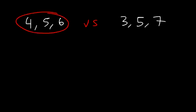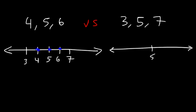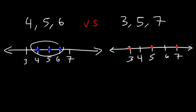4, 5, and 6 are closer to each other than 3, 5, and 7, and you can tell if we plot them on a number line. With 5 in the middle, 4, 5, and 6 are the blue points — very close together. In contrast, 3, 5, and 7 are the red points — further apart. Therefore, 4, 5, and 6 has a lower standard deviation, and 3, 5, and 7 has a higher sigma value.